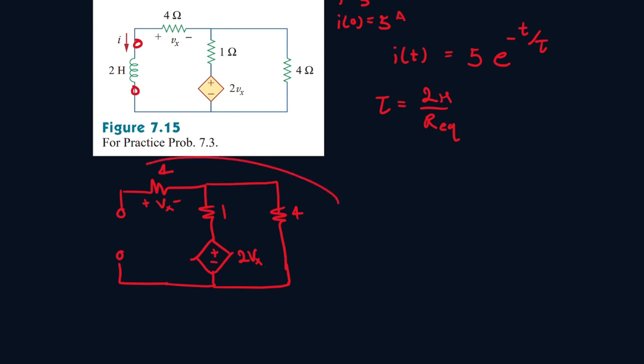But the problem is we can't sum up these resistors because there's a dependent source. And we can't turn off dependent sources. So what we're going to do is do a test charge, like how we used to do with the resistance. We'll call this test charge 1 volt.